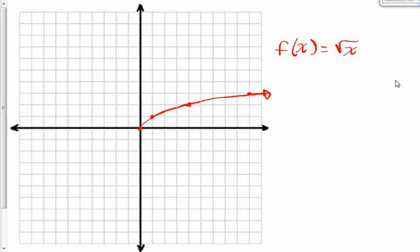The first thing I want to do is define my point of tangency. So let's take an arbitrary point of tangency with an x value of c. If the x value is c and that's my point of tangency, then the y value is just going to be the square root of c, because any y value in this function is just the square root of the x value. So this is my point of tangency.